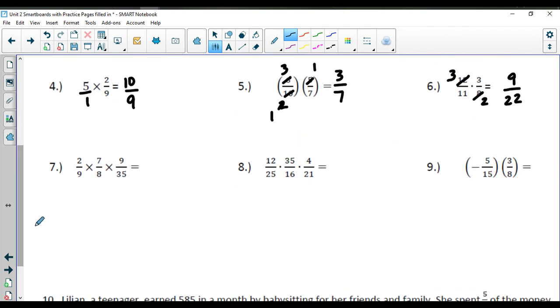In the next example, I have a triple fraction problem here, and I can reduce anything on diagonals as well as up and down. I'm going to start with the 2 and the 8. Common factor is 2. I can also reduce this 9 and 9, with the common factor being a 9. And then looking across here, I have the 7 and 35, which has common factors of 7. 1 times 1 times 1 on the top is 1. 1 times 4 times 5 on the bottom is 20. So we get 1 20th.